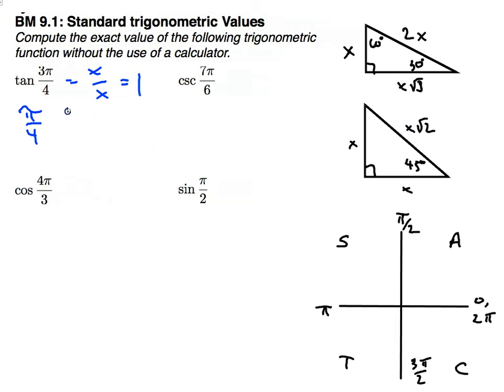So the tangent of π over 4 is 1, but I need 3π over 4, so I need to determine which quadrant that's in. π over 4 is in the first quadrant, and then the next π over 4 that cannot be simplified is the next quadrant. So π over 4 here, 2π over 4 simplifies, 3π over 4 is in quadrant 2. And my All Students Take Calculus says that sine is the only one that's positive. So the tangent of 3π over 4 is negative 1.